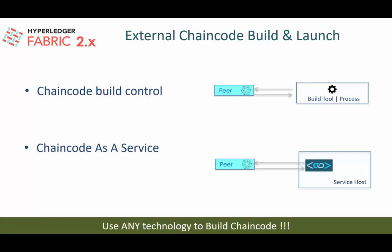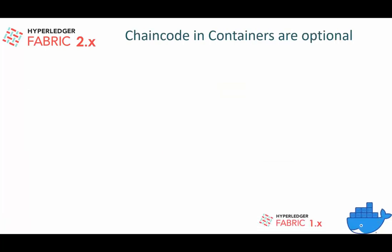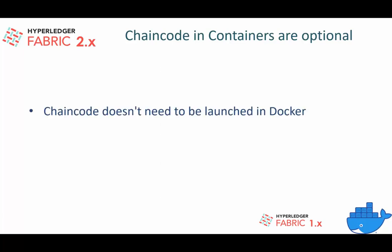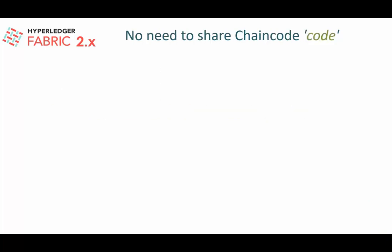You can use any technology to build the chaincode because the build and launching process is externalized. Fabric 1.x always launched the chaincode in Docker containers, whereas in Fabric 2.x, due to support for external launchers, the chaincode doesn't necessarily have to be launched in Docker containers. The default mechanism in Fabric 2.x still launches the chaincode in Docker containers.